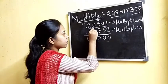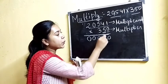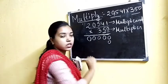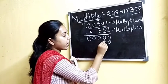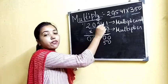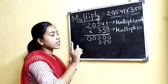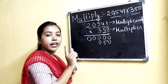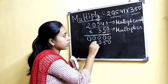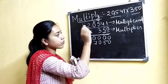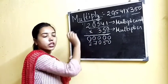Now we will multiply this number by five. Five is in the tens place, so we will put a zero in the ones place in the next line. Now we will multiply this number by five. Five ones are five. Five fours are twenty — write zero, carry two. Five fives are twenty-five, plus carry two is twenty-seven — write seven, carry two. Five zeros are zero, zero plus two is two. Next, five twos are ten.